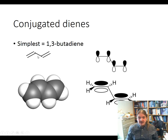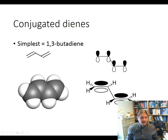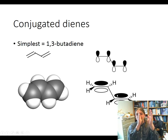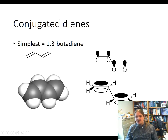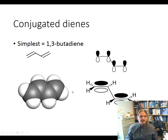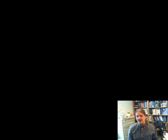Conjugated dienes have continuous chains of sp2 hybridized carbons. That means you have a sequence of p orbitals available at all of the carbon atoms, and they can all be aligned together. You can have pi bonds that are parallel to each other, which allows the shape of the molecule to assume a planar conformation as shown by this structure here. In the next video, I'm going to introduce you to the basic ideas of molecular orbital theory, which is very useful for describing the bonding of conjugated molecules.